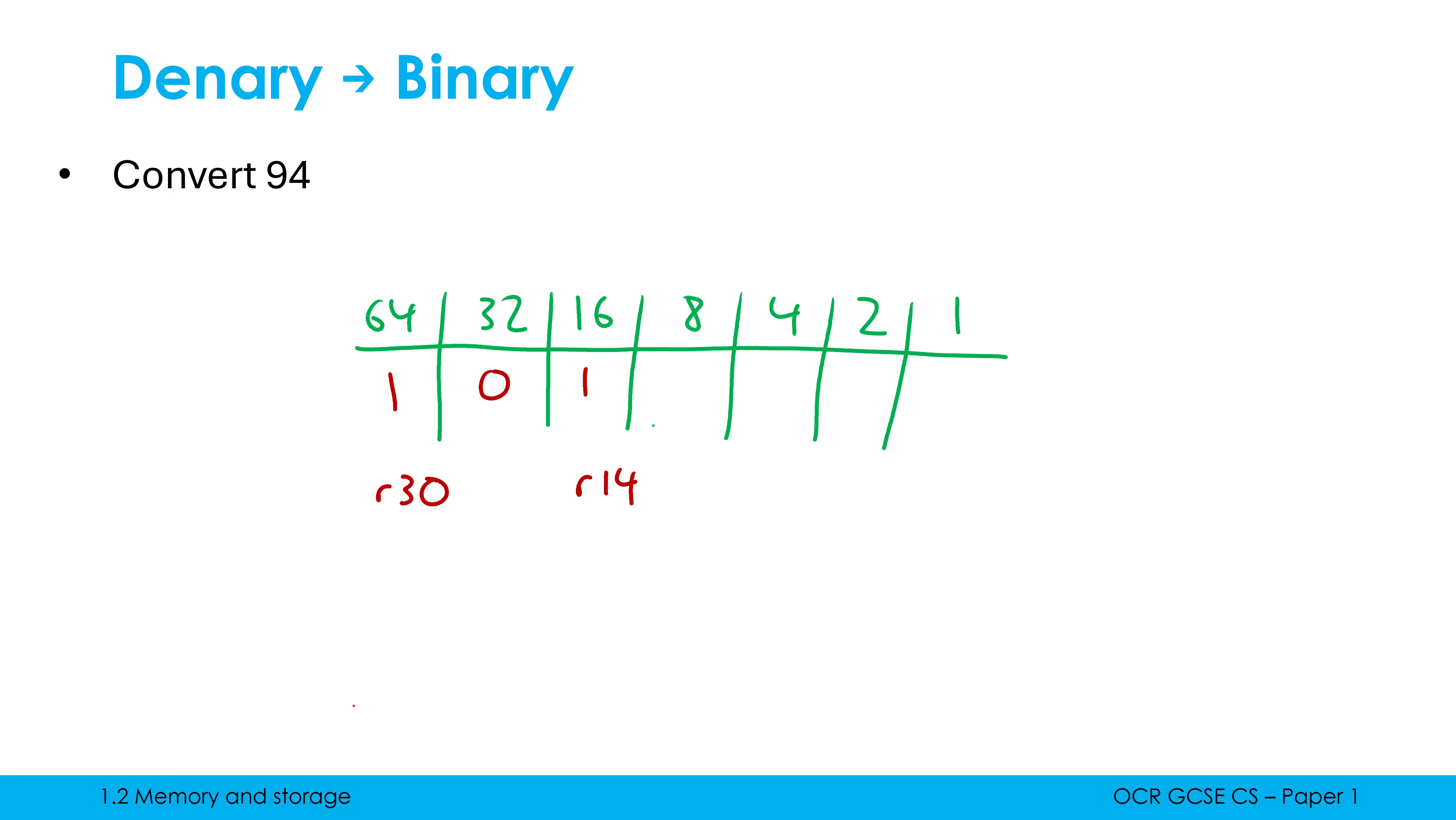8 goes into 14 one time with a remainder of 6. 4 goes into 6 one time with a remainder of 2. 2 goes into 2 one time with a remainder of 0. So once again, my ones column is left with a 0 in it. The answer is 1011110.